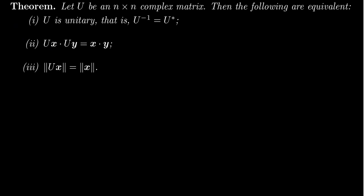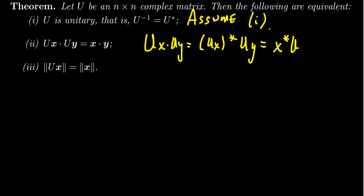So let's first assume the first one. So assume one. So our matrix is unitary. It's inverse is its conjugate transpose. So then consider the calculation Ux dot Uy. This is equal to Ux star times Uy, for which by properties of the conjugate transpose, this is x star U star Uy.